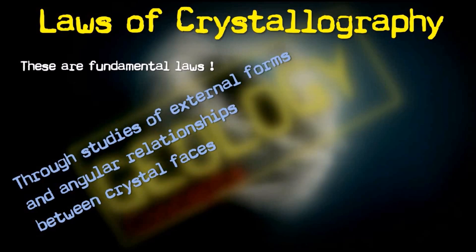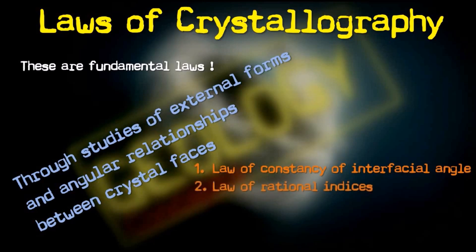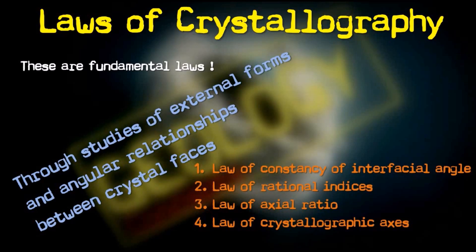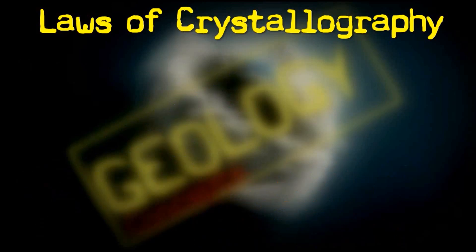These laws are as follows: the first law is the Law of Consistency of Interfacial Angle; the second law is the Law of Rational Indices; the third law is the Law of Axial Ratio; the fourth is the Law of Crystallographic Axis; and the fifth law is the Law of Consistency of Symmetry. These are very simple laws and we'll go through each one by one.